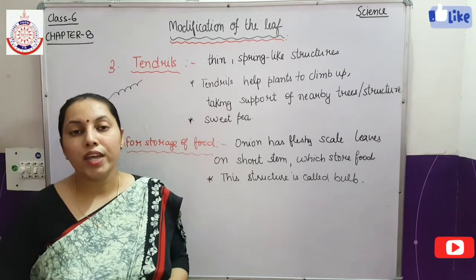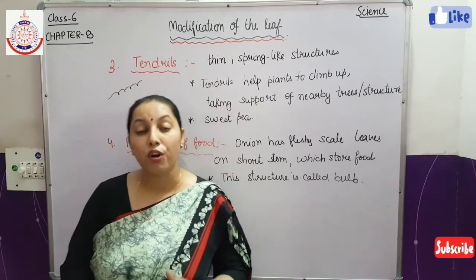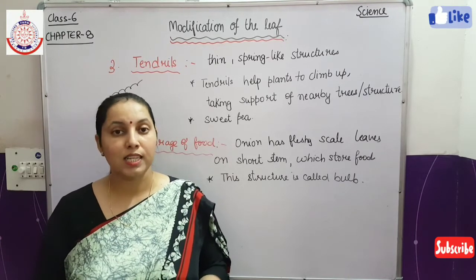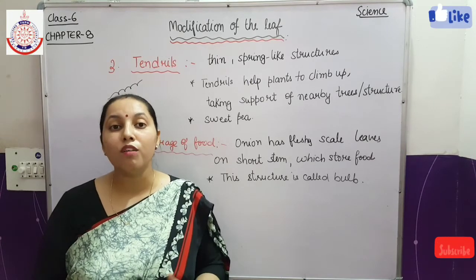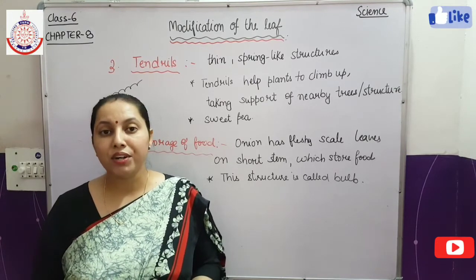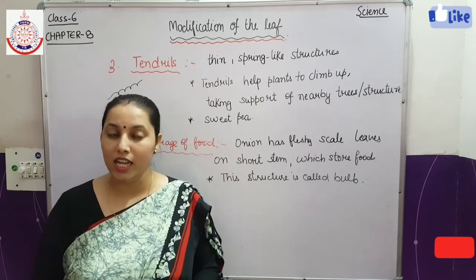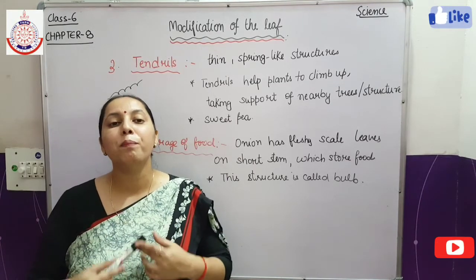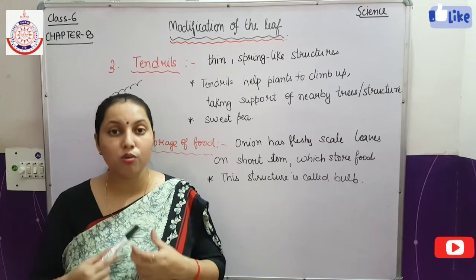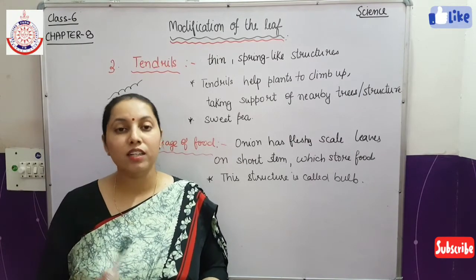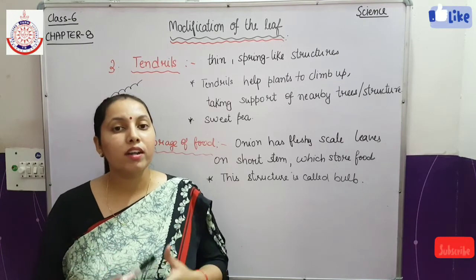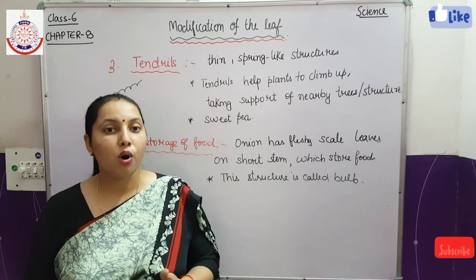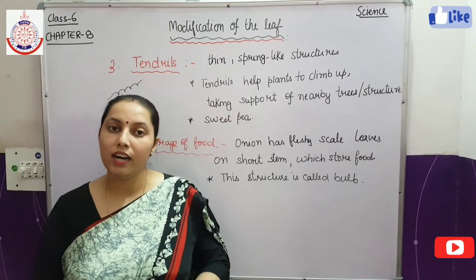So, what have we learned today? We have firstly learned the functions of the leaf: the leaves help in the production of food, exchange of gases, and the loss of water — meaning transpiration. After that, we discussed the modifications in the leaves: they modify to protect themselves by creating thorns and spines and to prevent the loss of water. If the stem of the plant is very weak, tendrils are developed, and also food is stored in the leaves.